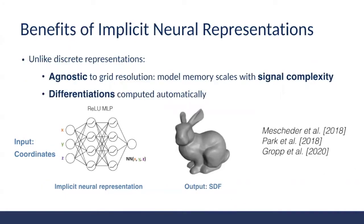Unlike discrete representations, this kind of continuous representation has two major benefits. The first is that they're agnostic to grid resolution and model memory can scale with signal complexity. For instance, when modeling shape in 3D space using a ReLU MLP, we might use fewer hidden units to model a rabbit, and more hidden units to represent a room. The second benefit is that their derivatives can be computed automatically, offering a new toolbox for solving inverse problems such as partial differential equations.